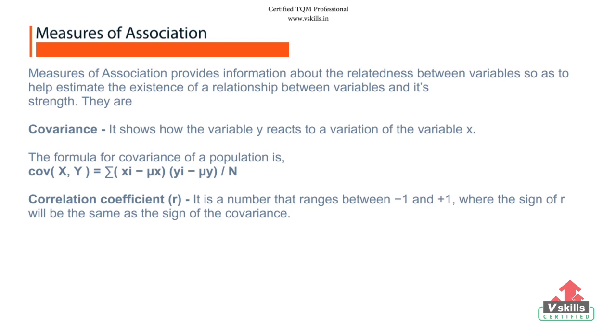Measures of association refer to a wide variety of coefficients, the statistical strength of the relationship on the variables of interest. These measures of strength or association can be described in several ways, depending on the analysis.